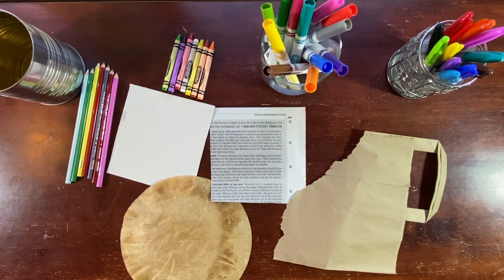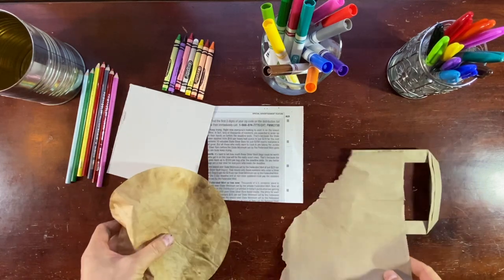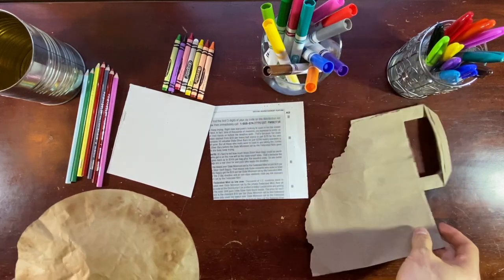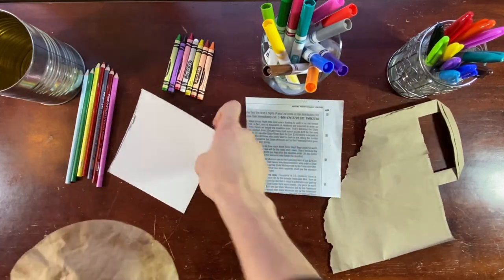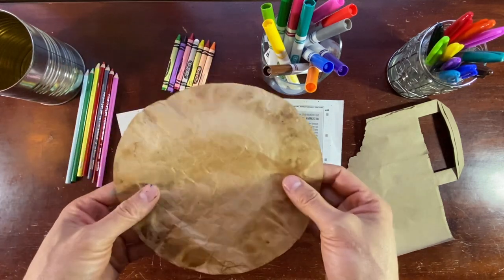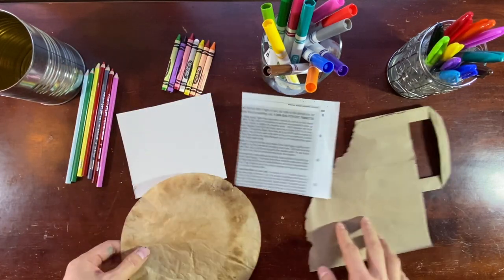So the first thing you have to do is gather as many different types of paper as you have around the house. Here I have a piece of brown paper bag, a piece of newspaper, a piece of cereal box, and a used coffee filter that I saved.